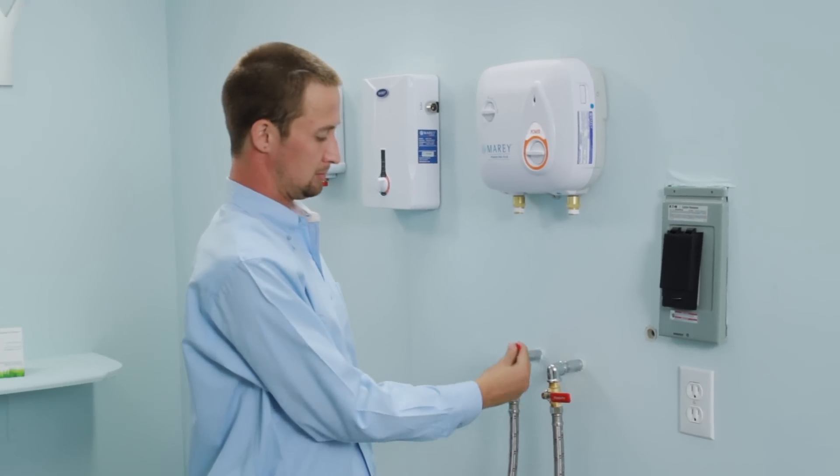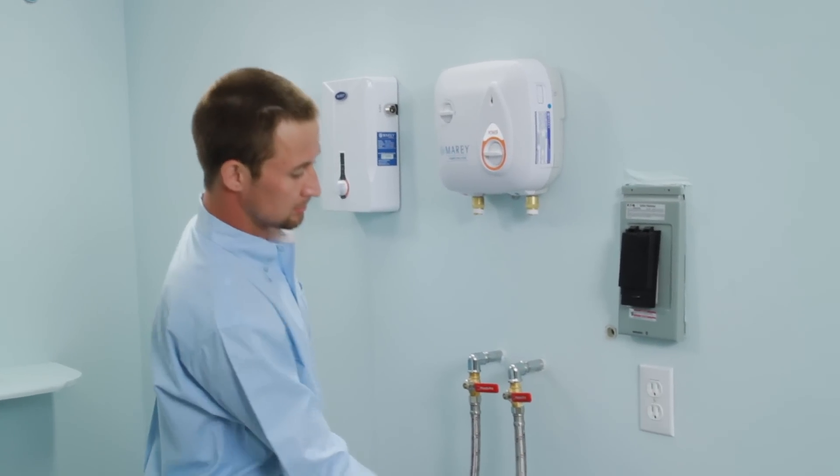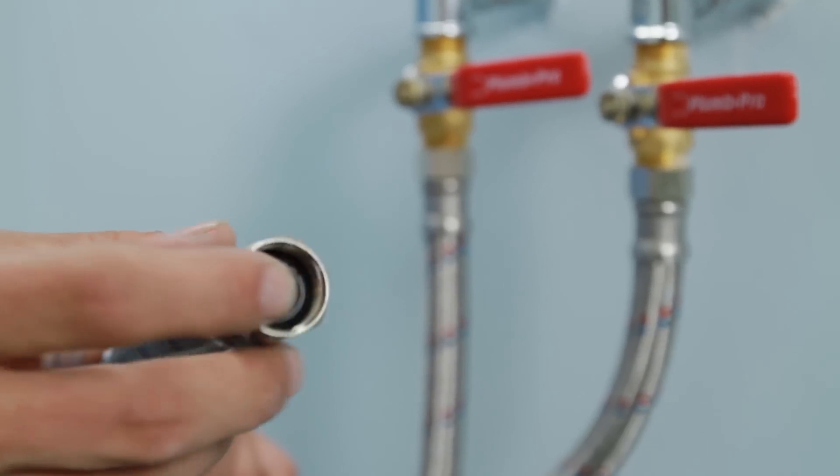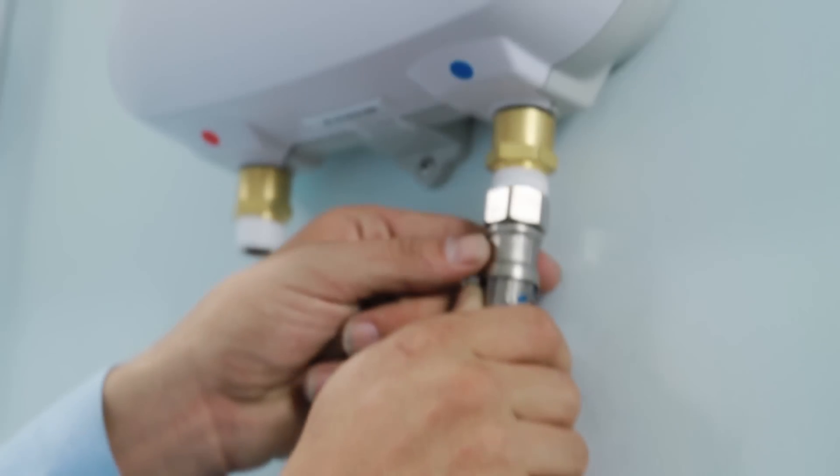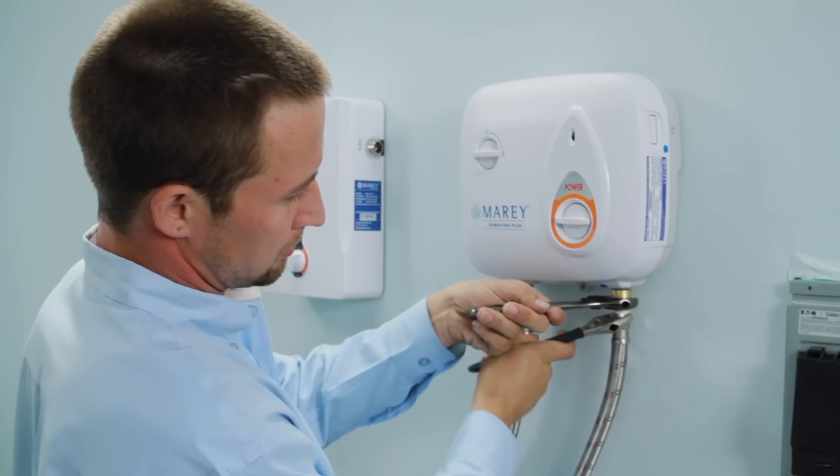We recommend that you install a valve at the unit supply so that you can turn off the water supply to the unit if needed without shutting off the supply to the rest of the home. Recommended water pressure will vary depending on the model that you have, so be sure to check your homeowner's manual to confirm the correct PSI.